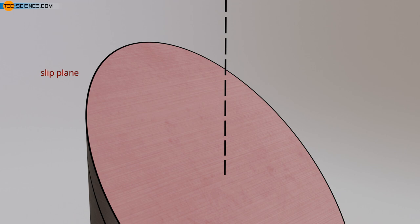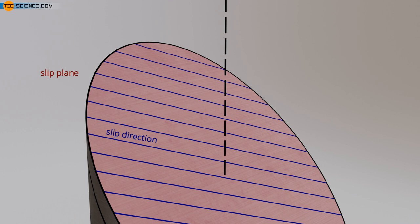However, a force in the slip plane alone is not sufficient. Within the slip plane, the force must also be directed in slip direction. If, for example, a shear force acts in a slip plane but is directed perpendicular to the slip direction, this slip plane will not be sheared off.